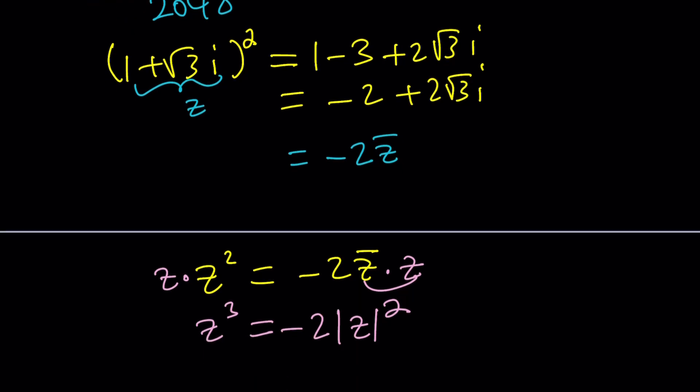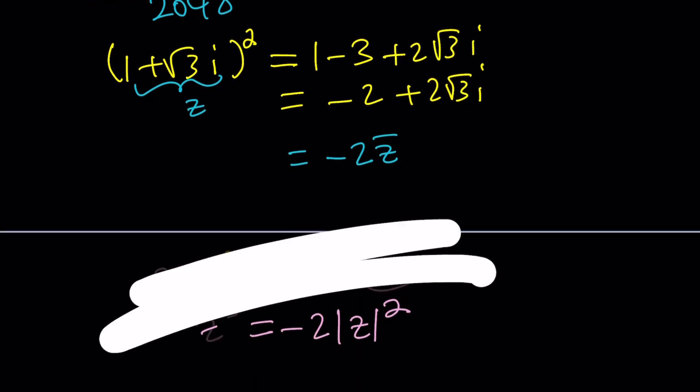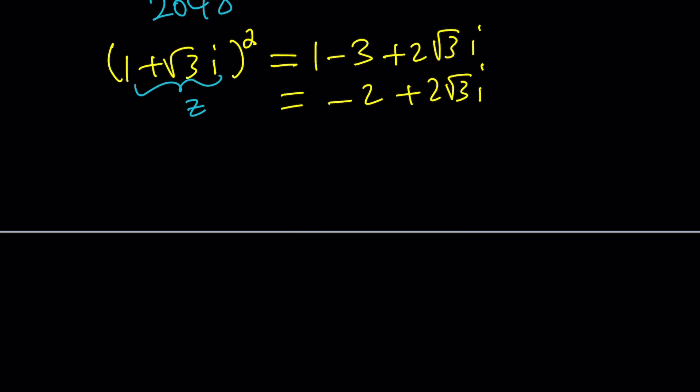At least, this demonstration hopefully shows you that something interesting is going to pop up with z cubed. Let's do it. Pretend you don't know what you're doing. Z cubed is just going to be this times z, which is 1 plus root 3i. Let's simplify it.